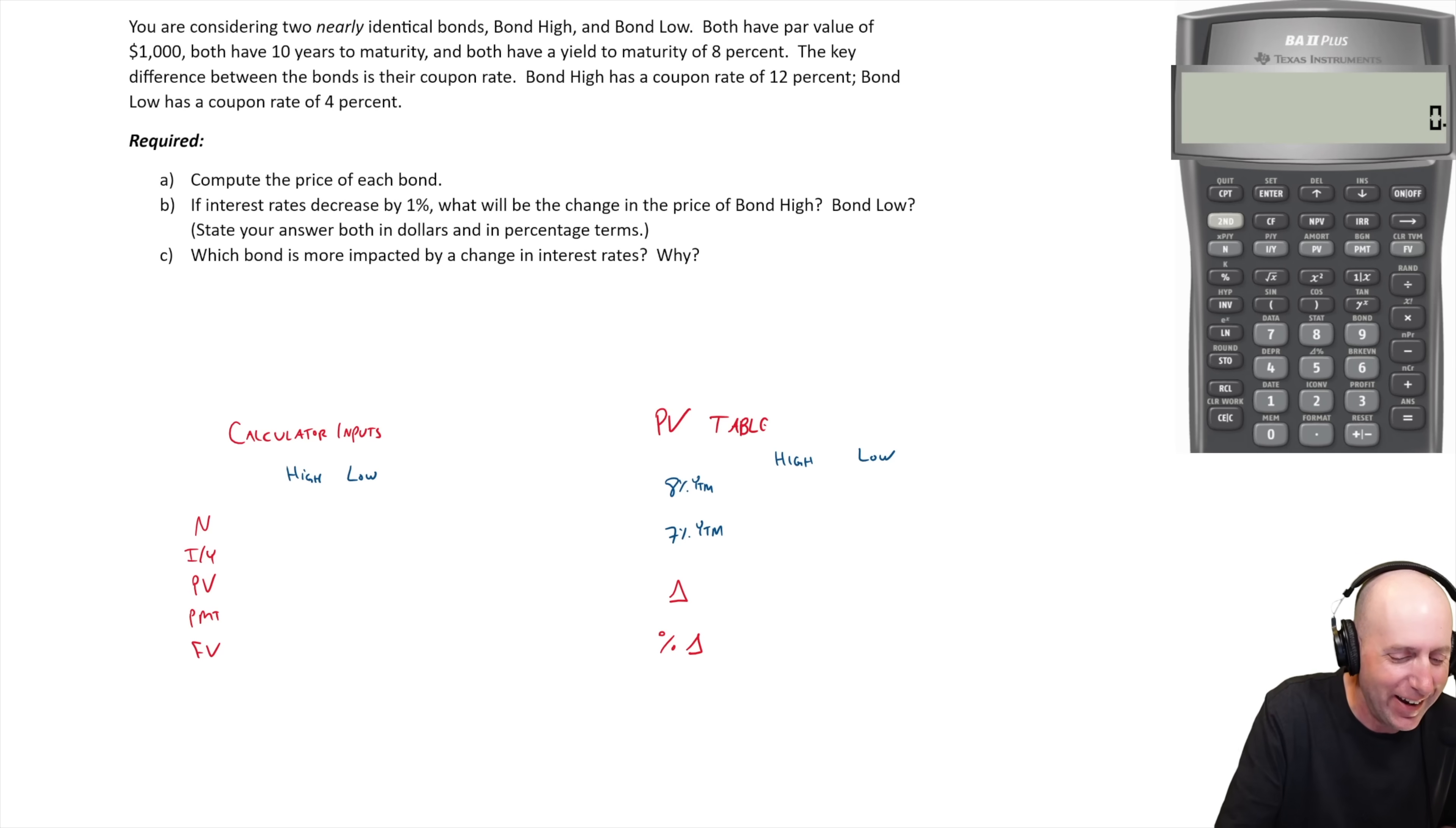Compute the price of each bond. The high number of periods: 10 years to maturity means there's 20 payments, 20 interest periods, same for high and low. The IY is based on the yield to maturity which is 8%, but of course this is semi-annual so we divide by 2, we put 4% into our calculator. PV we don't know in either case. PMT, this is the one that's different between the two alternatives. Bond high pays 12%, so $1,000 times 12% is $120 divided by 2, our payment is $60 semi-annually. For bond low, 4% of $1,000 is $40 divided by 2 is $20. Our FV is $1,000 in both cases.